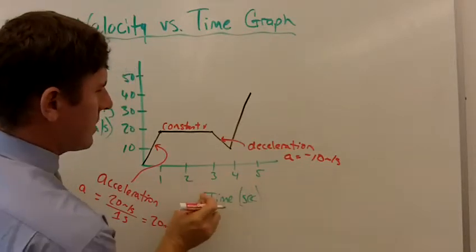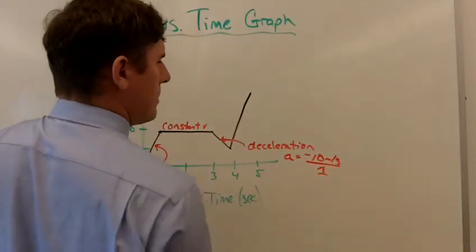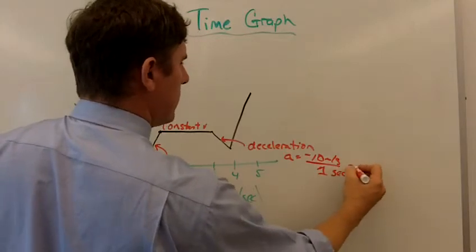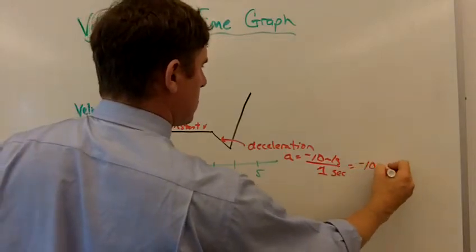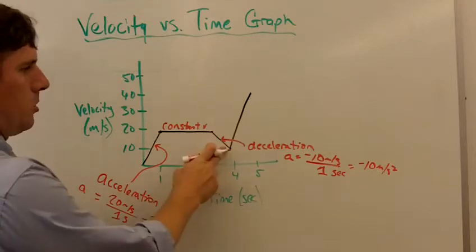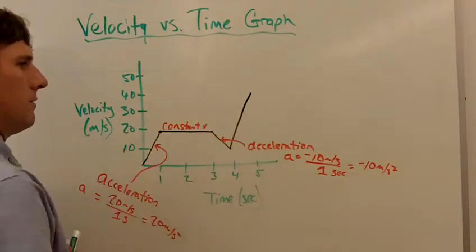So that's negative 10 meters per second divided by one second, gives us negative 10 meters per second squared. All right, that's the slope of that line. That's the acceleration of this object. It's slowing down at that point.